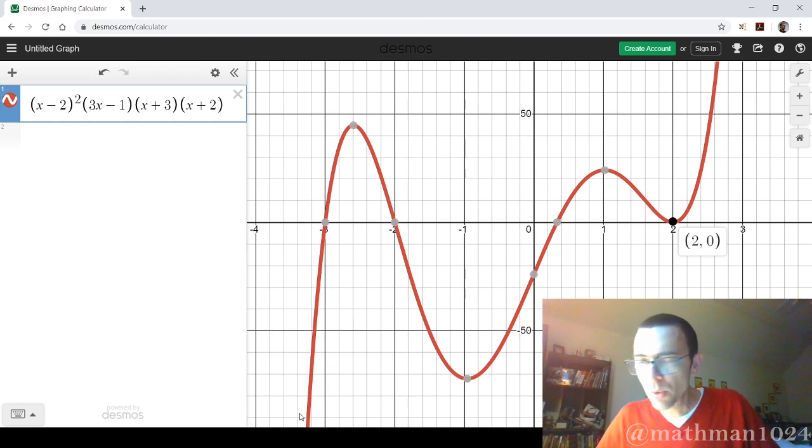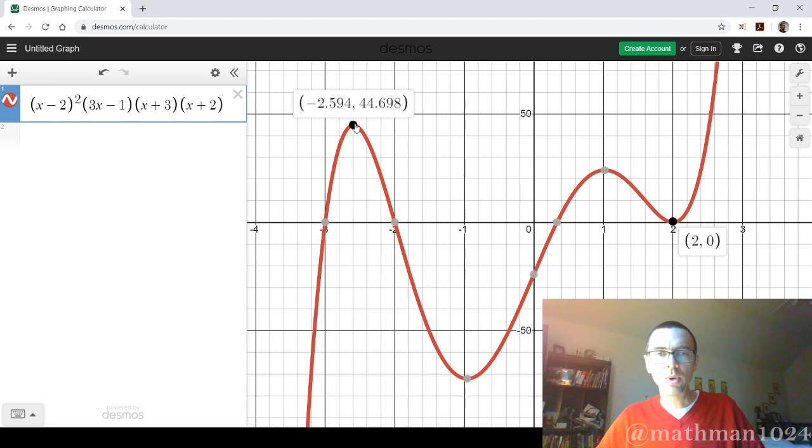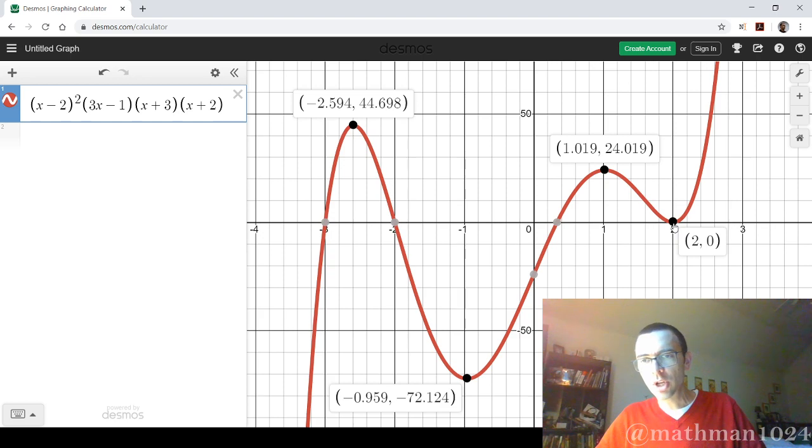Now, we said that we could have 4, 2, or 0 turning points, so let's count them. As I trace from left to right, there is one turning point here, and I start to go down. Then I turn to go up, so that's the second turning point. You turn to go down, so that's the third turning point. You turn to go up, so you have 4 turning points as indicated here on the screen.